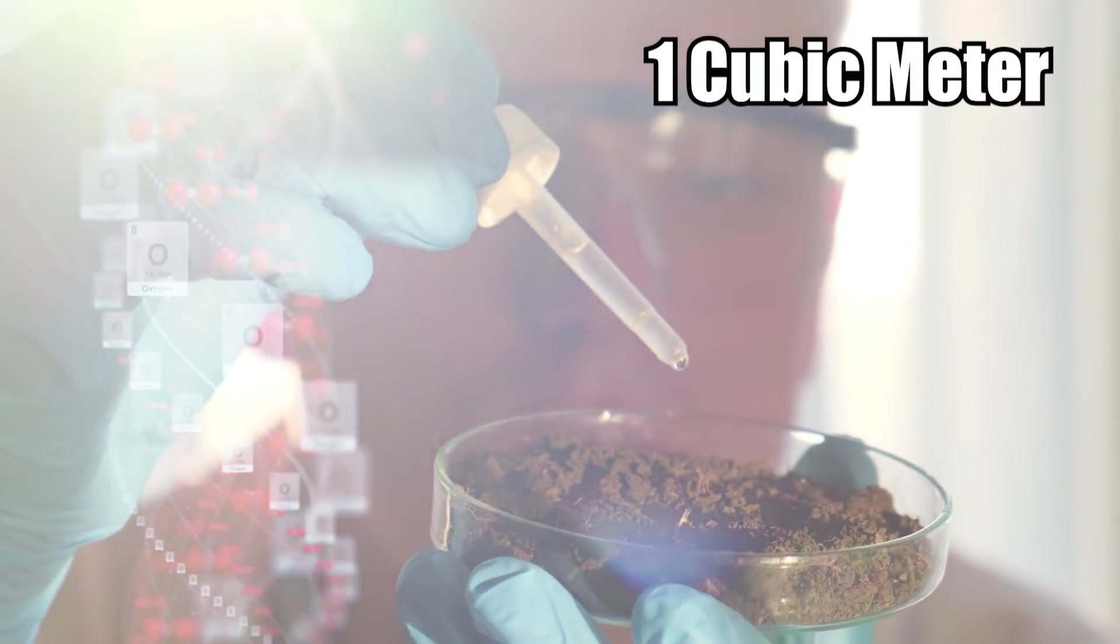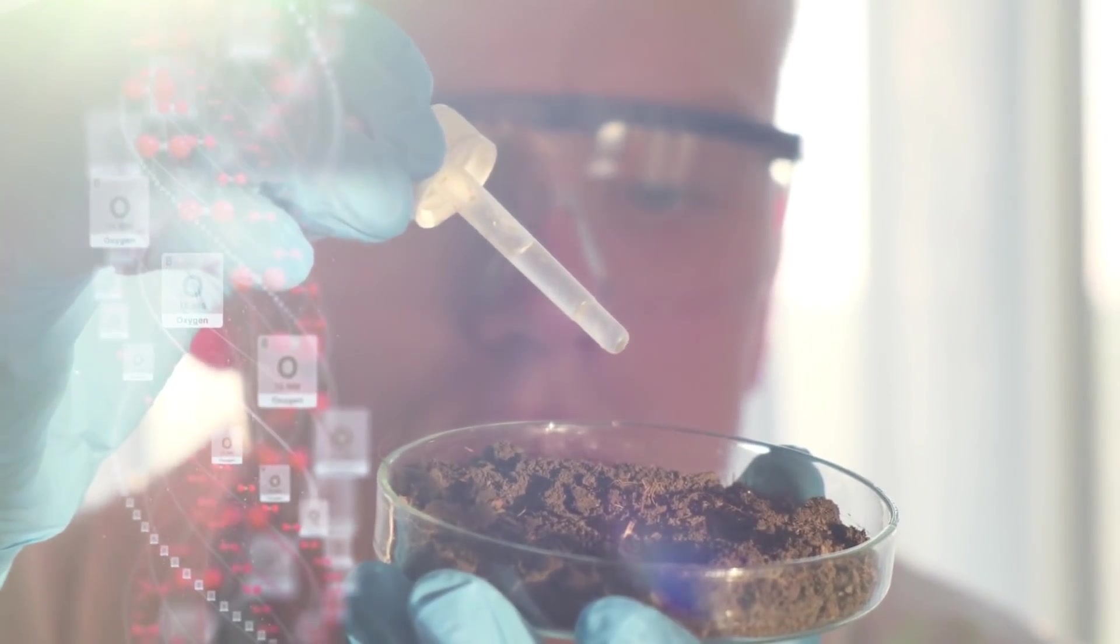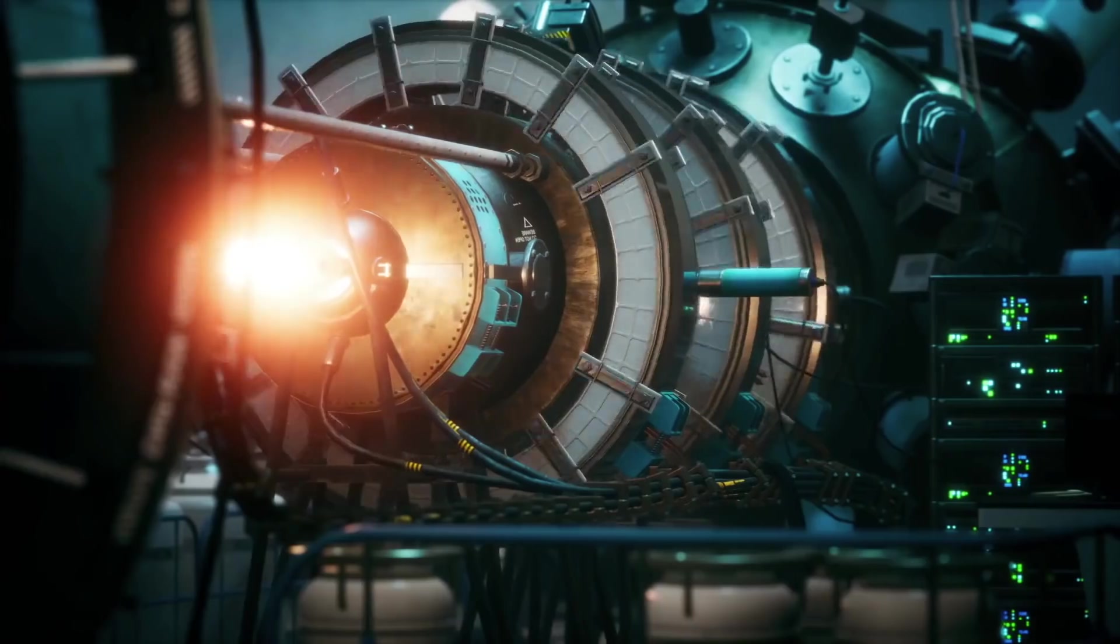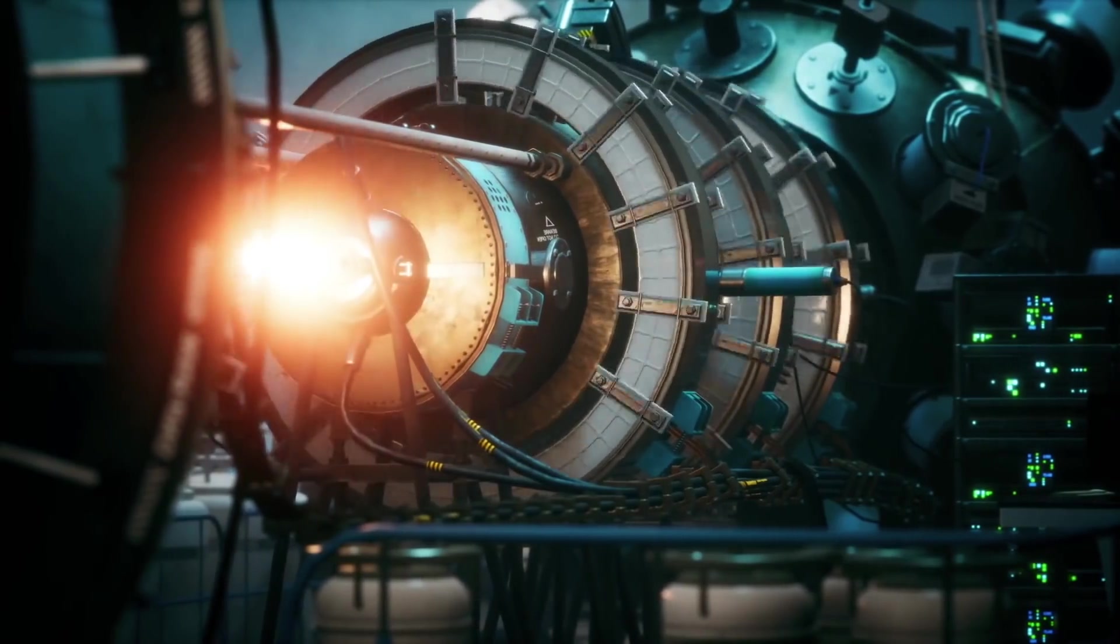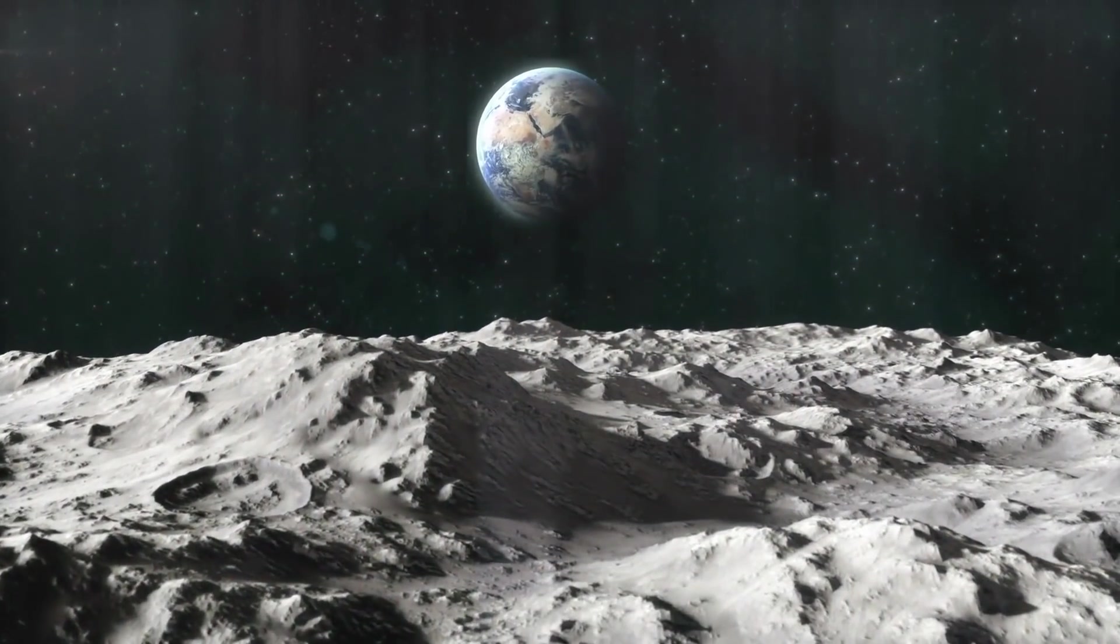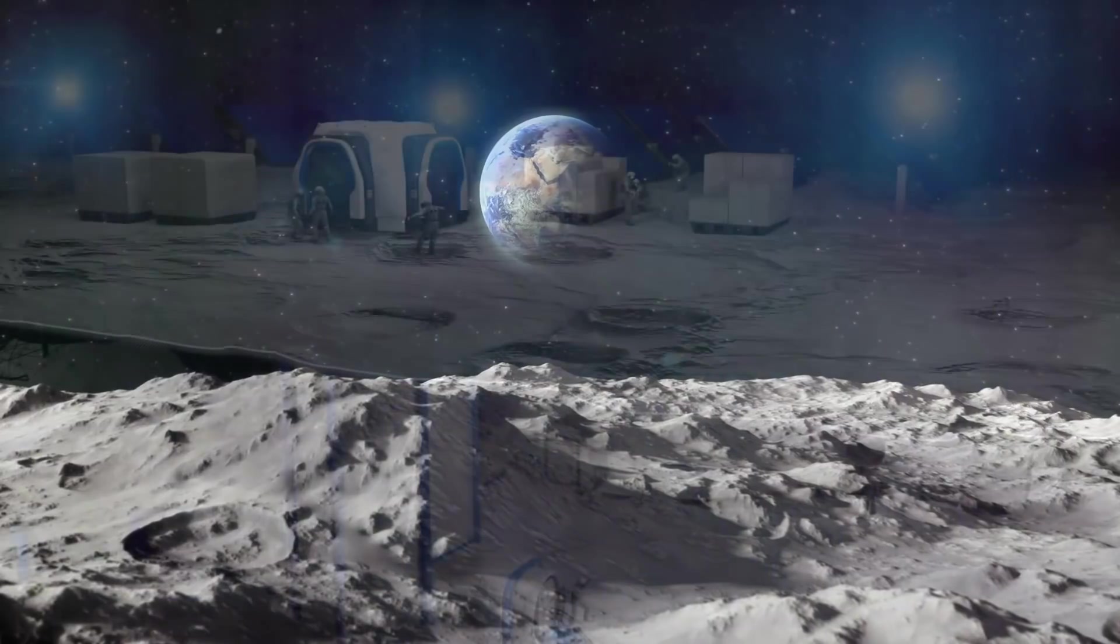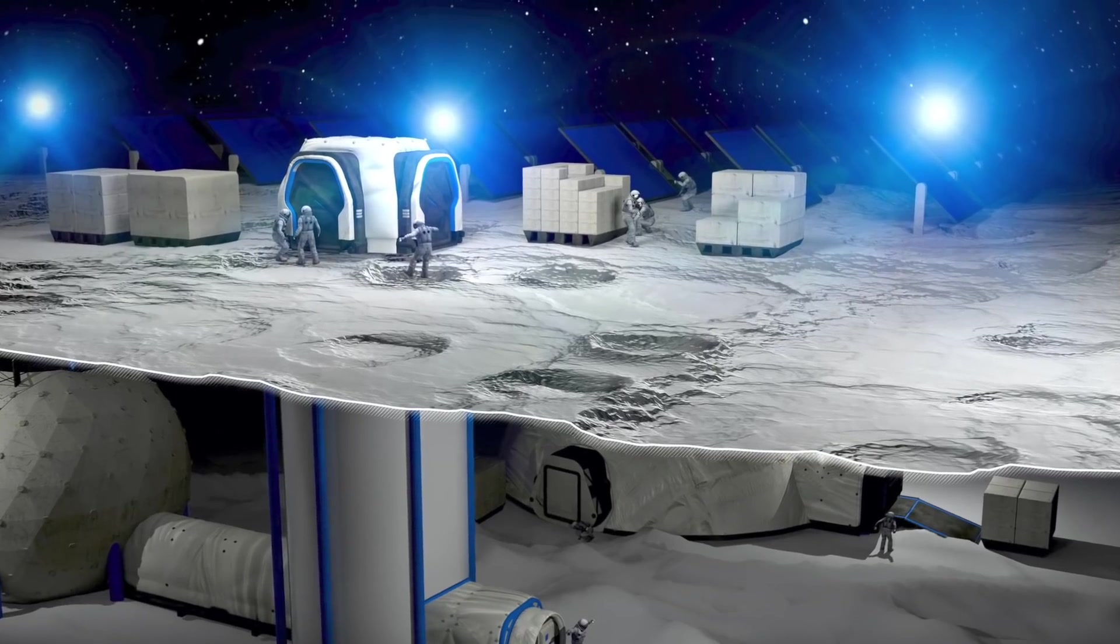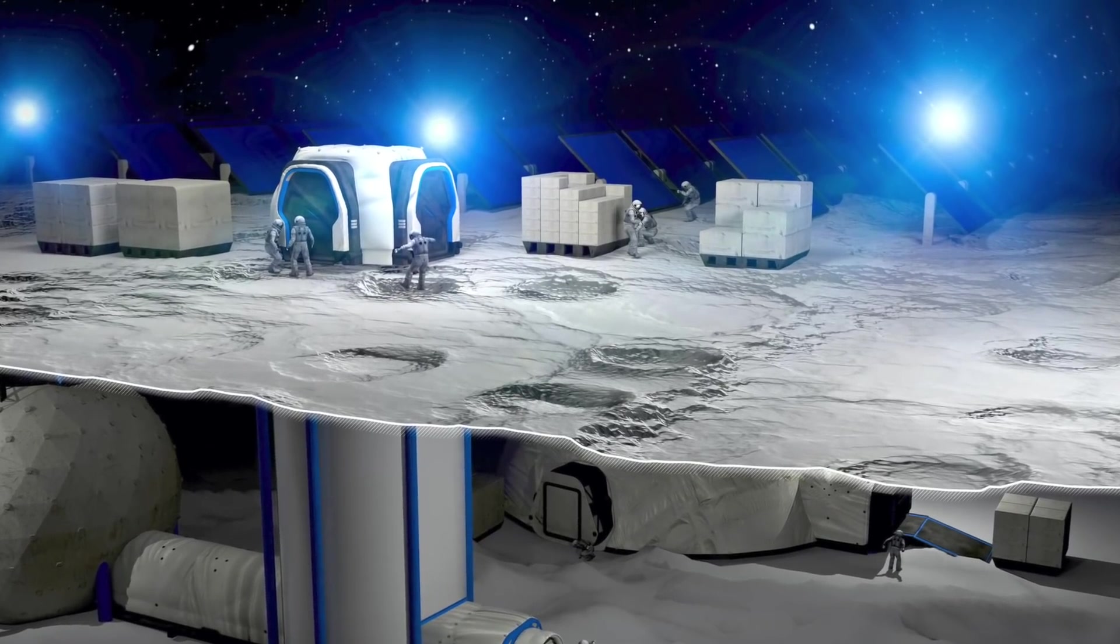If it is, then it will bring scientists one step closer to generating the type of oxygen we need to survive. Experts believe that a cubic meter of the lunar surface could generate enough oxygen for a human to live off of for two years. But theorizing and doing are two very different things. And whether or not their predictions will pan out remains to be seen. Still, it's a pretty amazing concept, literally mining oxygen to make the Moon habitable for humans.